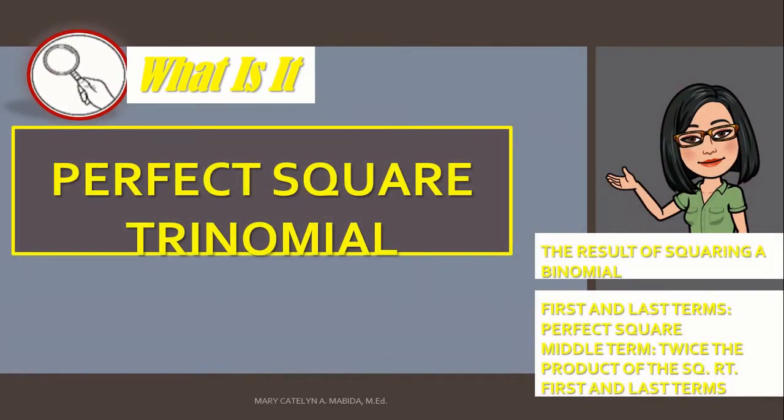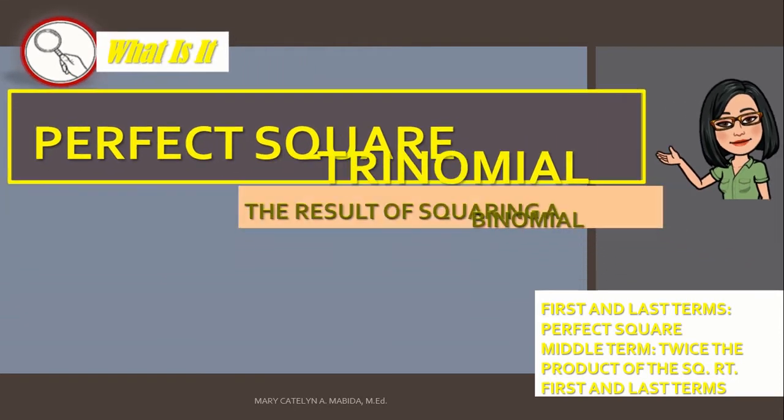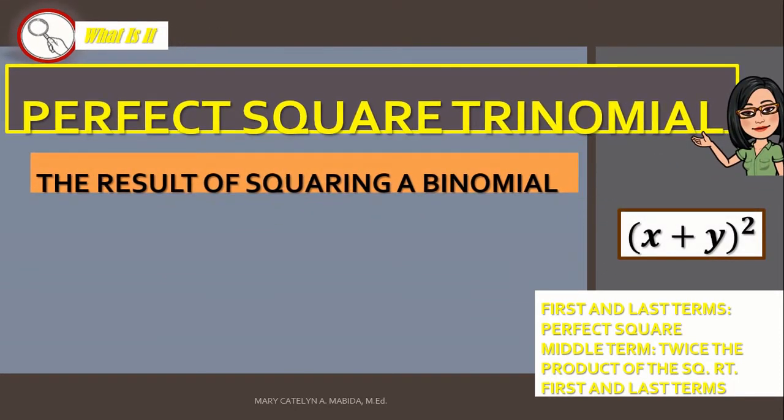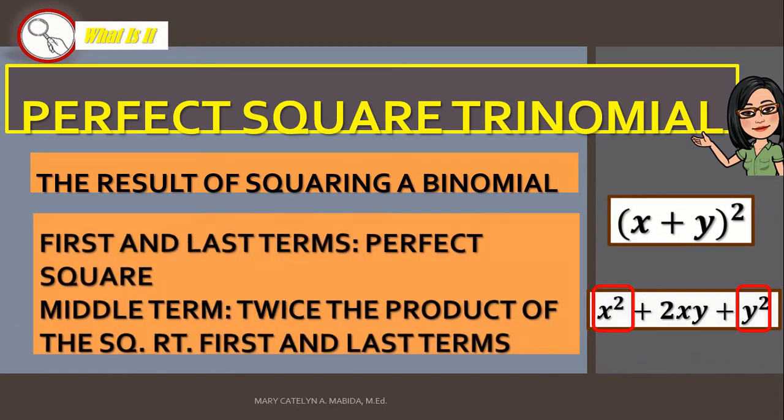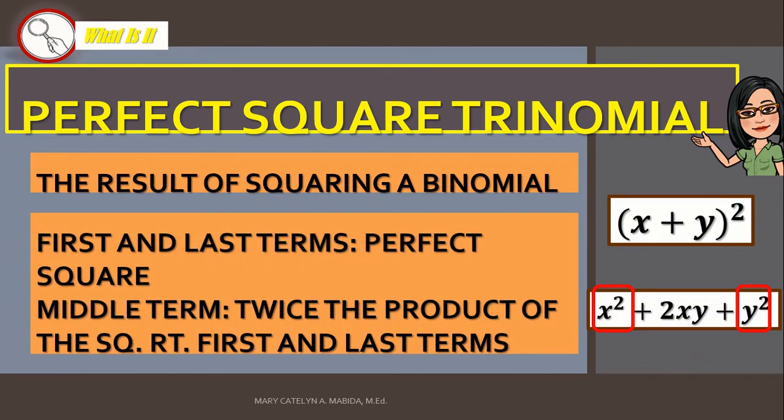The reverse of the square of a binomial is what we call the perfect square trinomial. Now, what is a perfect square trinomial once again? It is the result of squaring a binomial. A perfect square trinomial has first and last terms, which are perfect squares, and the middle term, which is twice the product of the first and the last term's square roots.